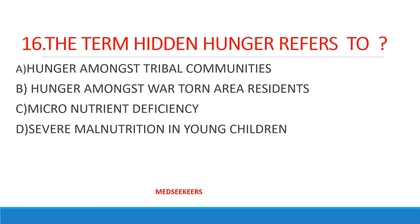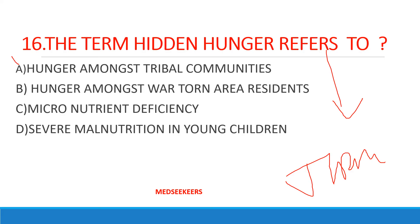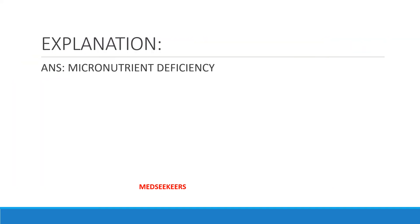This question was picked from public health nutrition — also asked in JIPMER 2019. The term 'hidden hunger' refers to — option A: hunger among tribal communities; option C: micronutrient deficiency; option D: severe malnutrition in anchor children. The correct answer is micronutrient deficiency. Please note this point in your notebooks.